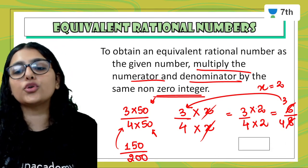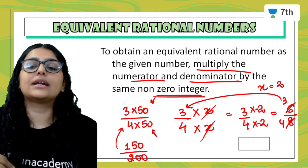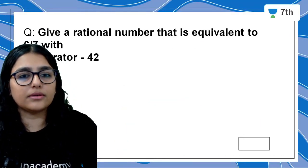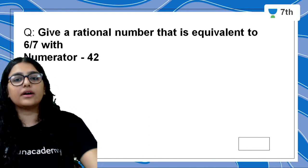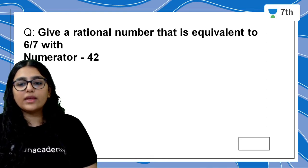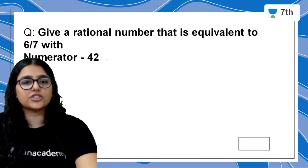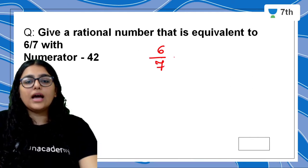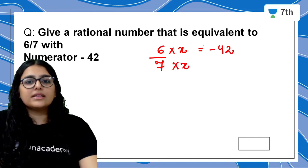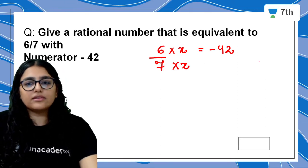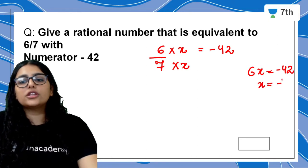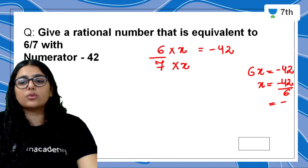If you multiply with negative numbers, don't forget to put the negative sign both in the numerator and denominator. For example: find a rational number equivalent to 6 by 7 with numerator equal to minus 42. The number is 6 by 7, and both are multiplied by the same x. Since 6 times x gives minus 42, x equals minus 42 divided by 6, which is minus 7.